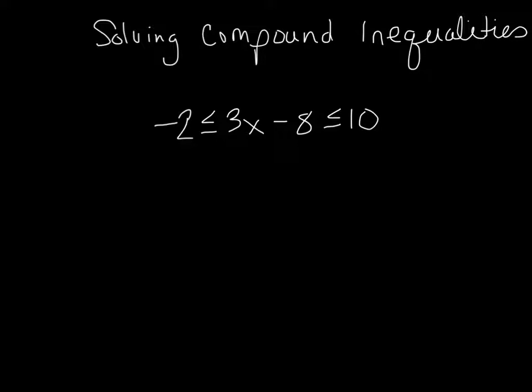You might have a compound inequality that needs solving. If we look at this one right here, it's an AND. What's special about this AND one is that we've got all of this stuff in the middle here, and then we've got two inequality signs here. Looking in the middle here, I'm trying to get X by itself, so I need to get rid of the three and I need to get rid of the minus eight.